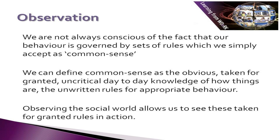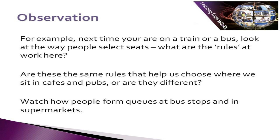Observing the social world allows us to see these taken-for-granted rules in action. What we need to do is to make the familiar everyday world our subject matter. For example, next time you are on a train or a bus, look at the way people select their seats. What are the rules at work here? Are these the same rules that help us choose where we sit in cafes and pubs, or are they different? Watch how people form queues at bus stops and in supermarkets.